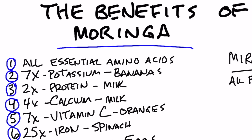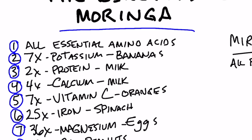First of all, it has all of the essential amino acids. Number two, it has seven times the potassium as bananas. Three, twice as much protein as milk. Four times as much calcium as milk.